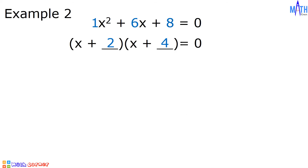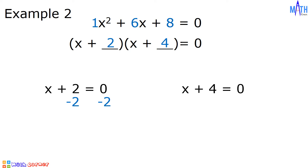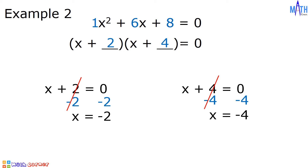Applying the zero-factor property, we have x plus 2 is equal to zero, and x plus 4 is equal to zero. In x plus 2 is equal to zero, we add negative 2 to both sides: x is equal to negative 2. In x plus 4 is equal to zero, we add negative 4 to both sides: x is equal to negative 4. The values of x are negative 2 and negative 4.